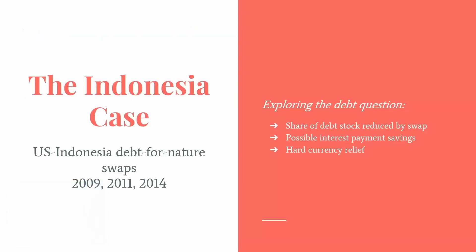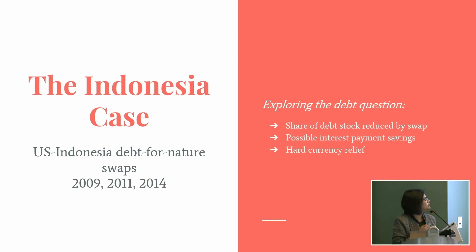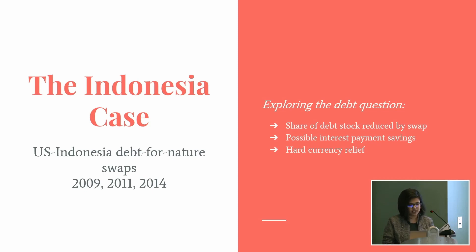I'm mostly looking at four main case studies of countries that undertook debt for nature swaps between 2000 and 2015, and I'll also talk about the Belize case. Starting with Indonesia: they had three debt for nature swaps, which were bilateral in nature under the Tropical Forest Conservation Act initiated by the U.S. government — back-to-back swaps in 2009, 2011, and 2014. I'm looking at this case to explore how it answers the debt question.